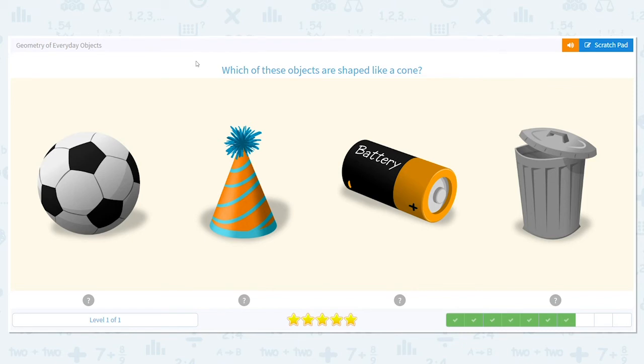How about here? Which one of these objects is like a cone? It doesn't matter which way the cone is facing. I will tell you there's only one. It's this party hat.